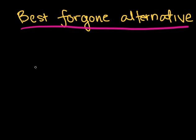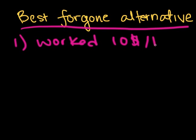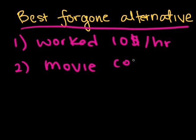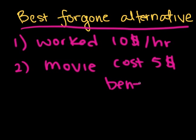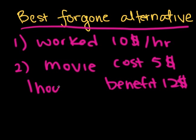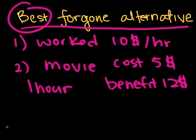Let's remember what alternatives Sam had in this situation. One, he could have worked for $10 an hour. Two, he could have watched a movie which would have cost him $5 and given him a benefit equal to $12, and this movie would have taken one hour to watch. Remember that opportunity cost depends on the best foregone alternative. In this case, we have two alternatives and we want to figure out which one is his best foregone alternative.